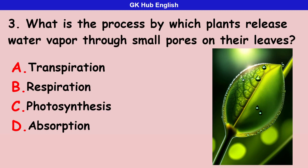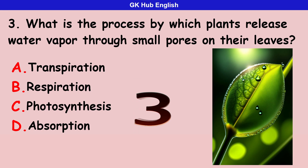Third question: what is the process by which plants release water vapor through small pores on their leaves? Option A is transpiration. Option B is respiration. Option C is photosynthesis. Option D is absorption. Correct answer is transpiration.